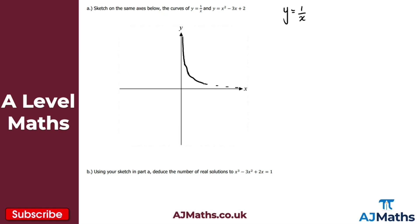Joining that up, we get the reciprocal curve in the first quadrant, and we do the same in the third quadrant — getting closer and closer to both the x-axis and y-axis. You can see the general shape. So that is y equals 1 over x.